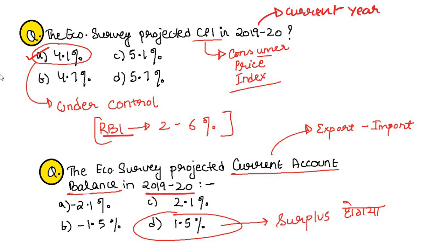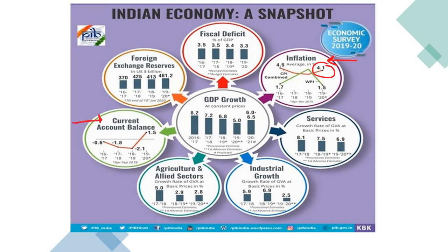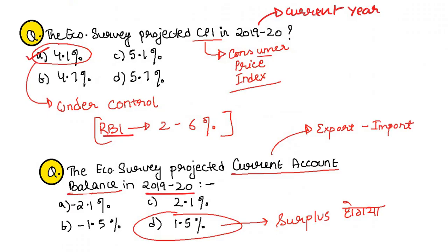The economic survey projected current account balance in 2019-20. Current account balance is exports minus imports — it can be a deficit or surplus. The data shown is from April to September 2019, and it is 1.5 — positive, meaning surplus. You have to remember these figures for your prelims and also for GS Paper 3, where mentioning them will fetch bonus marks.